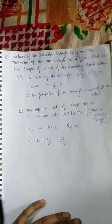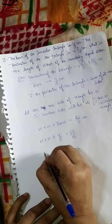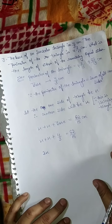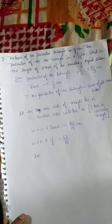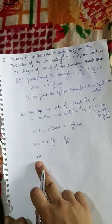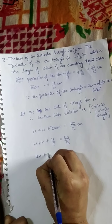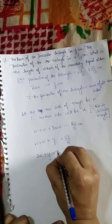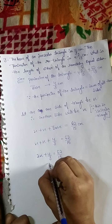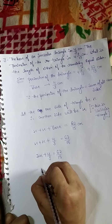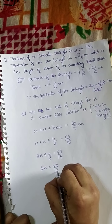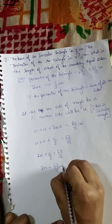Now we solve it. X plus X gives 2X. So: 2X plus 4/3 equals 62 upon 15. Shifting 4/3 to the right-hand side, it becomes minus 4/3. Therefore: 2X equals 62 upon 15 minus 4 by 3.